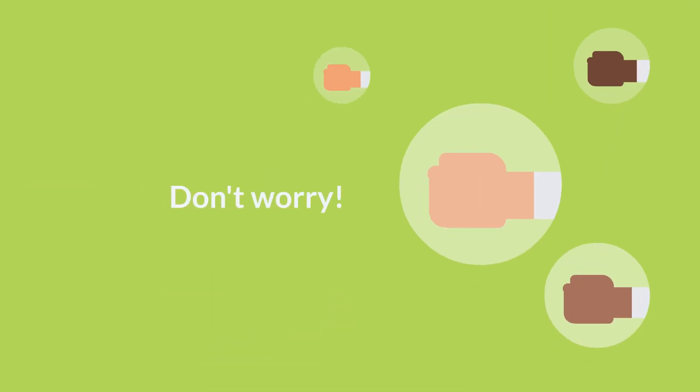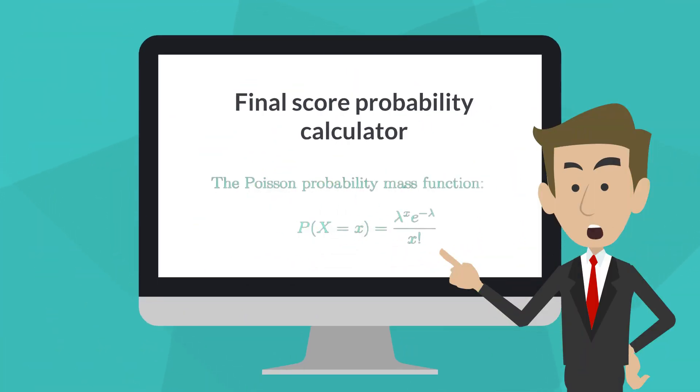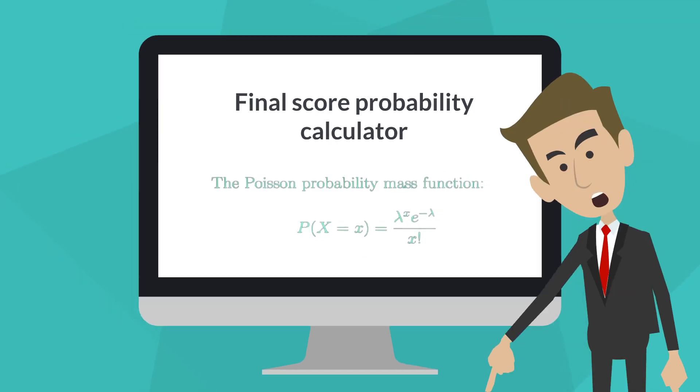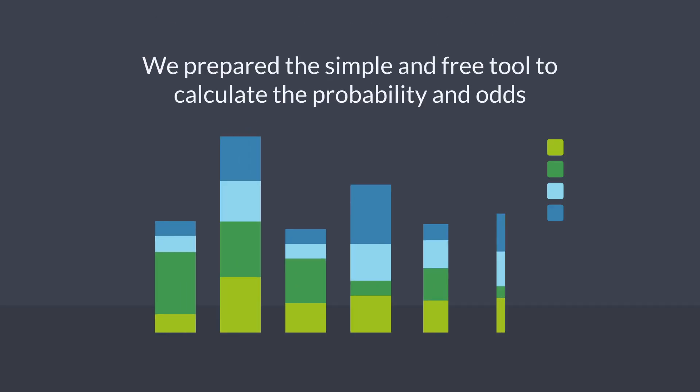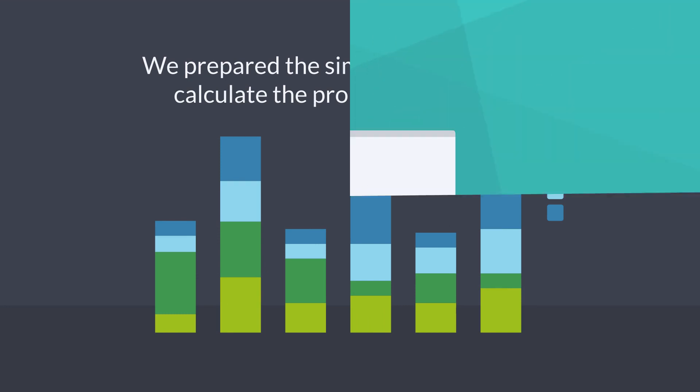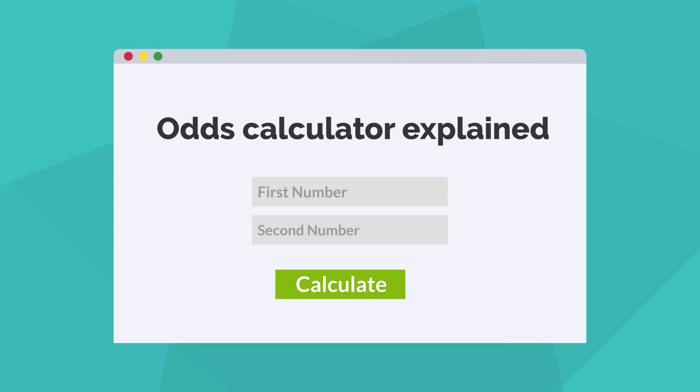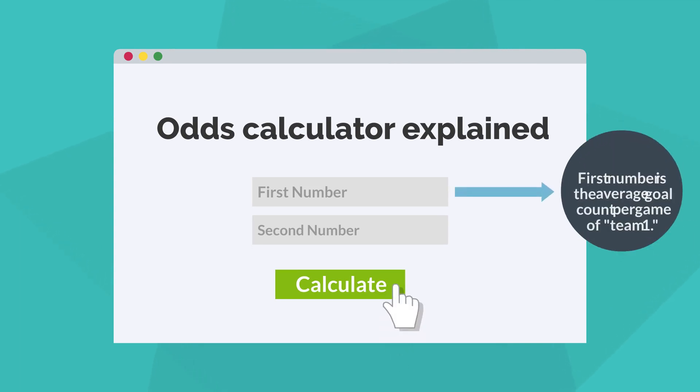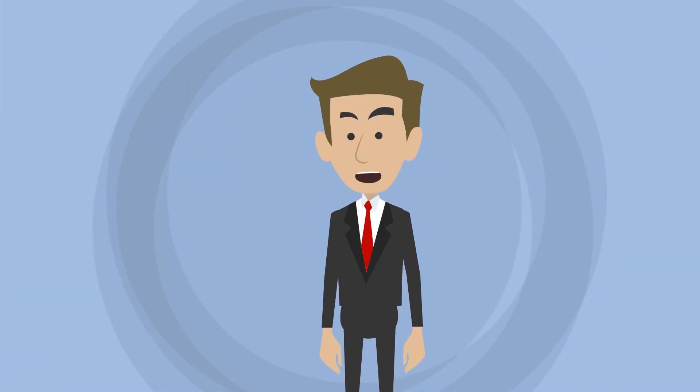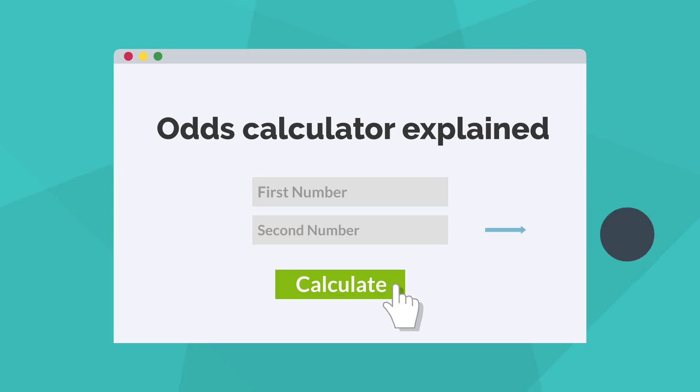Don't worry. In our final score probability calculator, which we linked in the description, we prepared a simple and free tool to calculate the probability and odds. All you have to do is feed it with two numbers: the average goal count per game of team one, and the average goal count per game of team two.